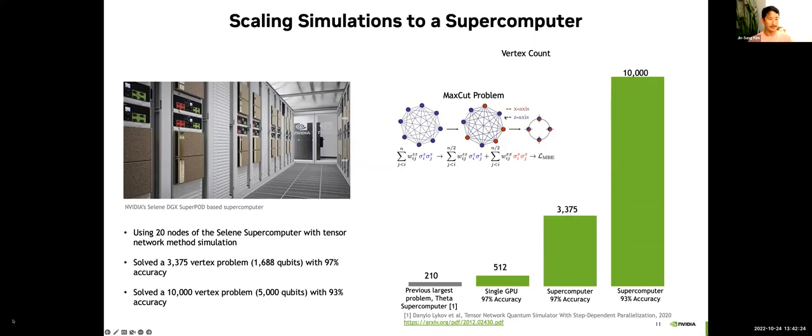I want to point out one really nice demonstration. Some of our colleagues at NVIDIA research developed a novel variational quantum algorithm and used it to attack this max cut problem with a known solution. We were able to scale this up onto 20 nodes of our Selene supercomputer. We were able to solve a 10,000 vertex problem which corresponded to a 5,000 qubit simulation with 93% accuracy. Really nice results and still room to improve this performance even better since we only used 20 nodes.